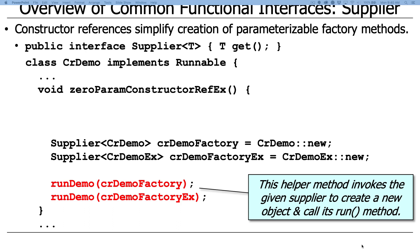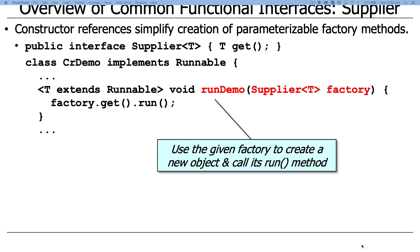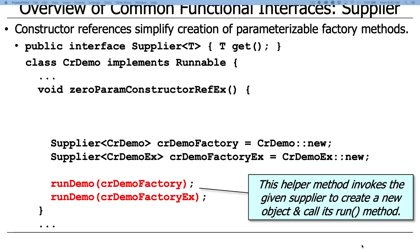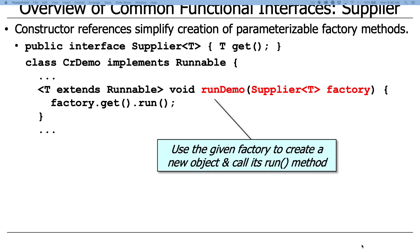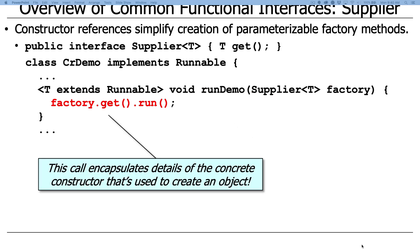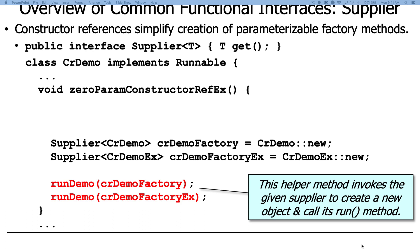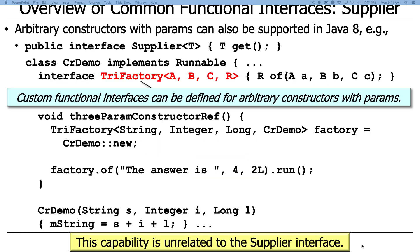The runDemo method takes a generic type that extends Runnable as a supplier parameter. It calls factory.get to make either a CRDemo or a CRDemoEx object depending on which supplier was passed, then calls .run. This single piece of code can be parameterized with different suppliers that create different objects whose run methods do different things.